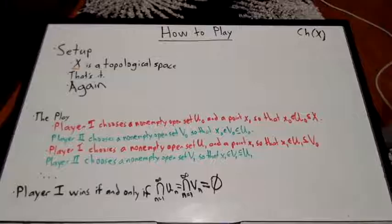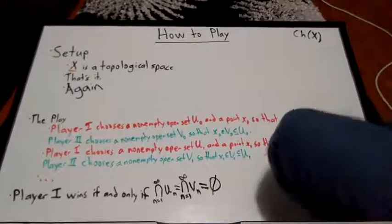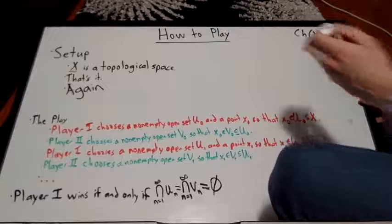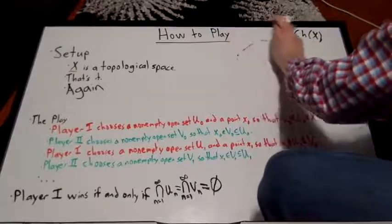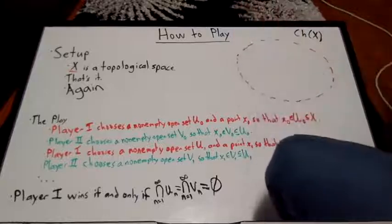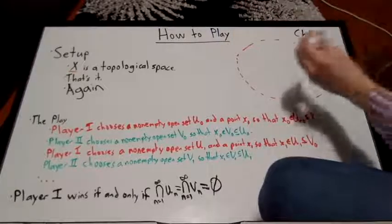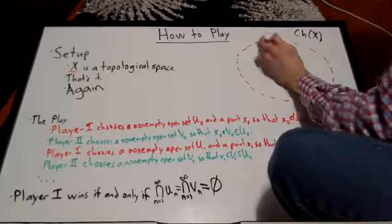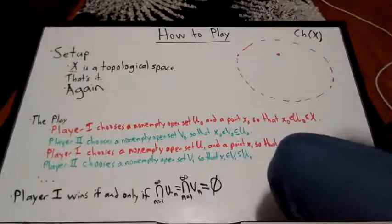As in the previous game, player 1 chooses some non-empty open set U0 in X. However, player 1 also chooses a point in that space. This is where it gets different now.